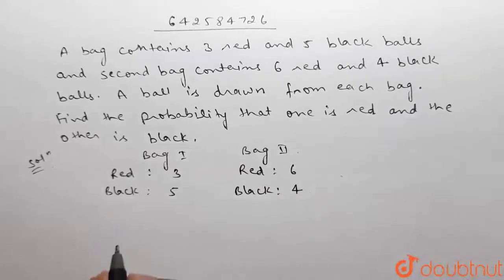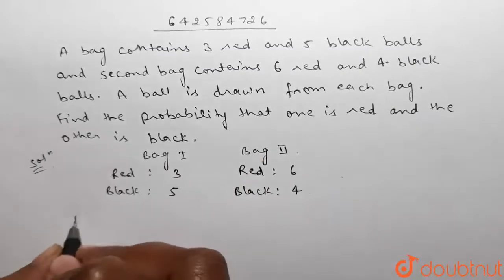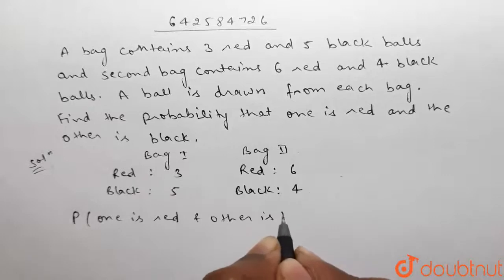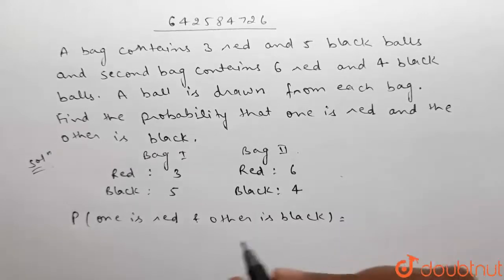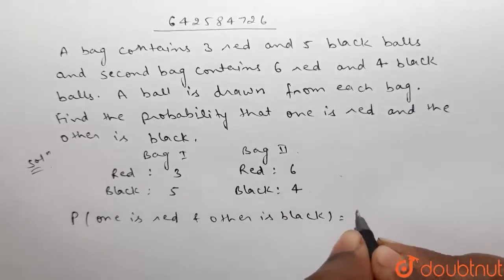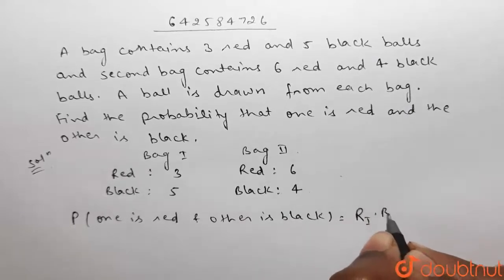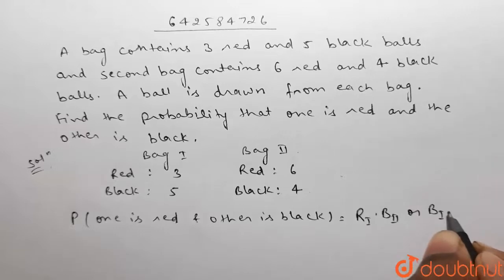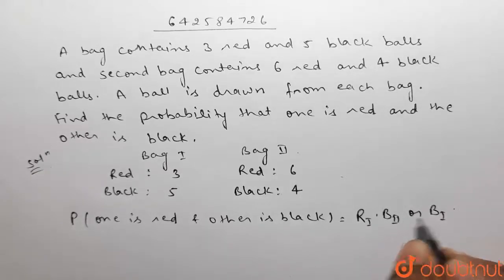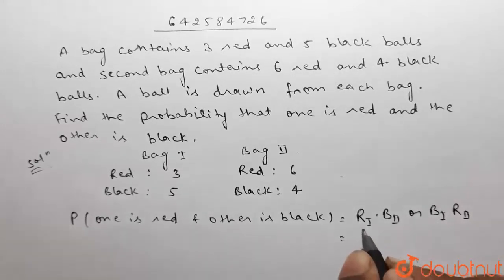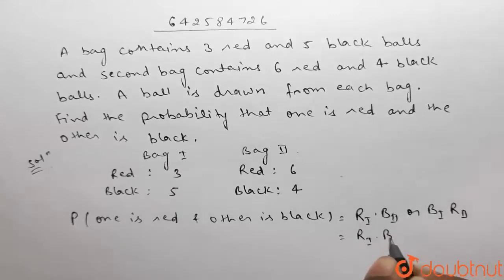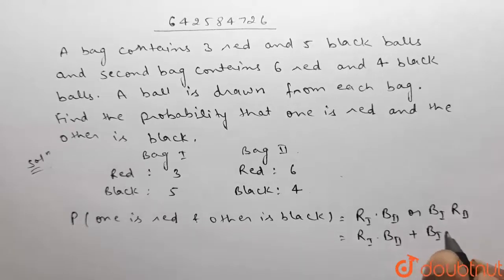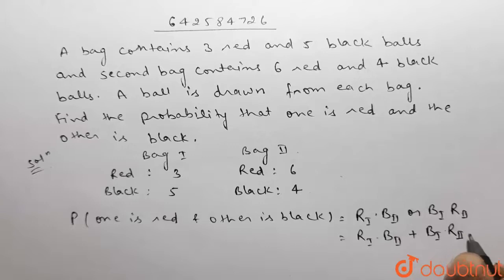We have to find the probability that one is red and the other is black. This equals the probability of getting a red ball from the first bag and a black ball from the second bag, or a black ball from the first bag and a red ball from the second bag.